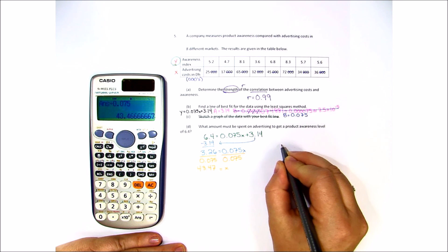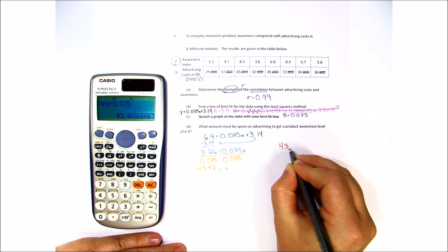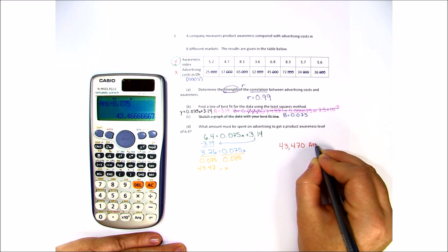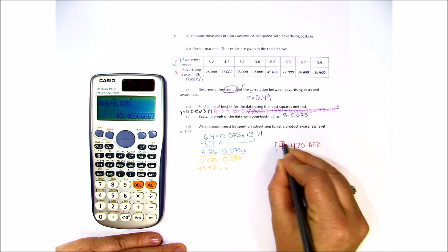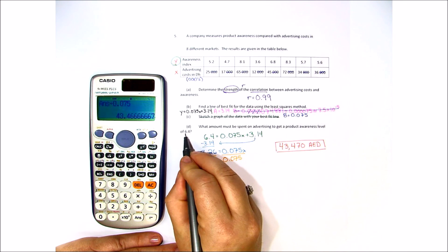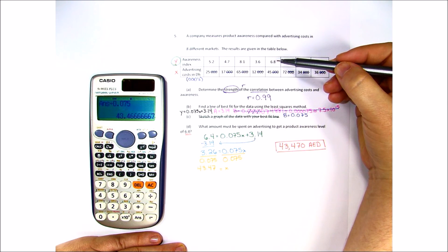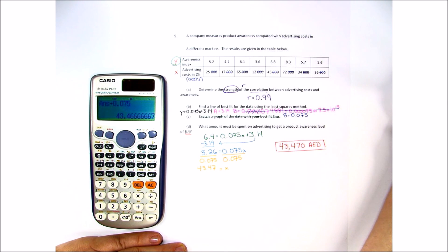So we expect them to spend 43,470 dirhams on advertising to get a product awareness level of 6.4. And if you look, that's pretty close to what our data already suggests.